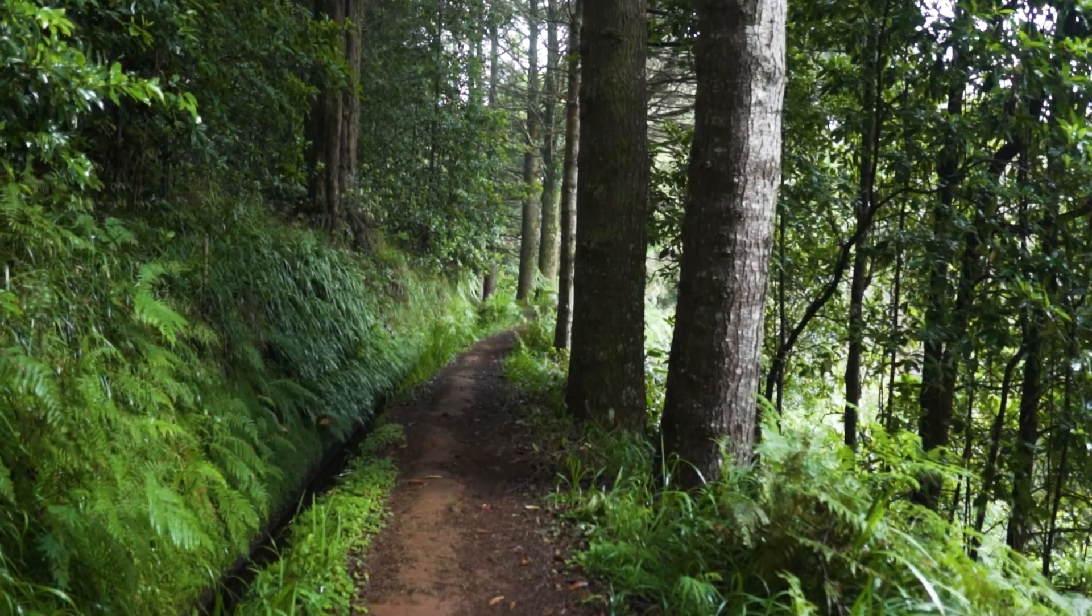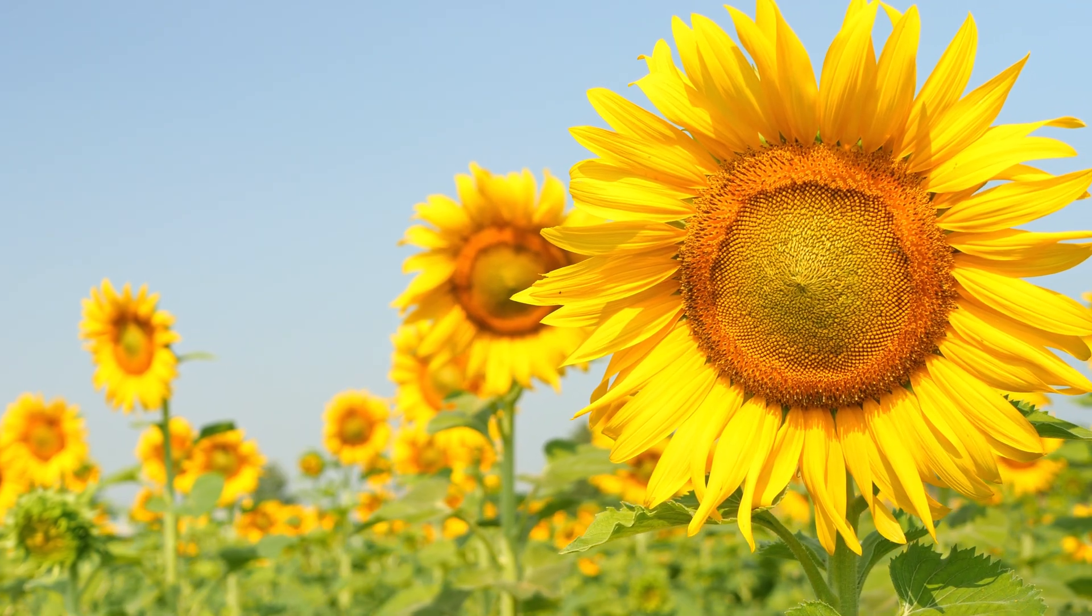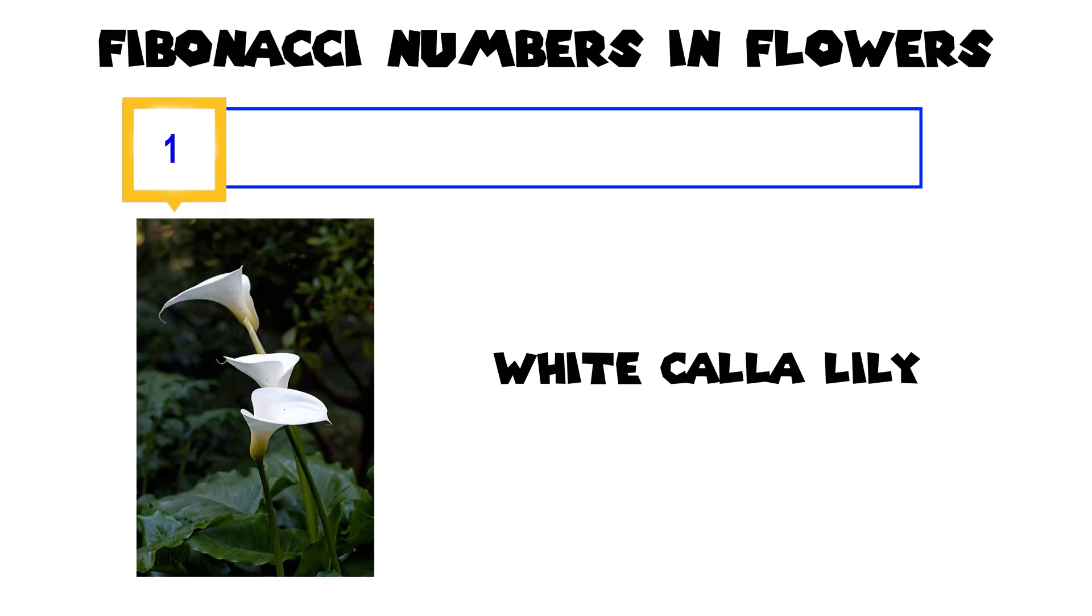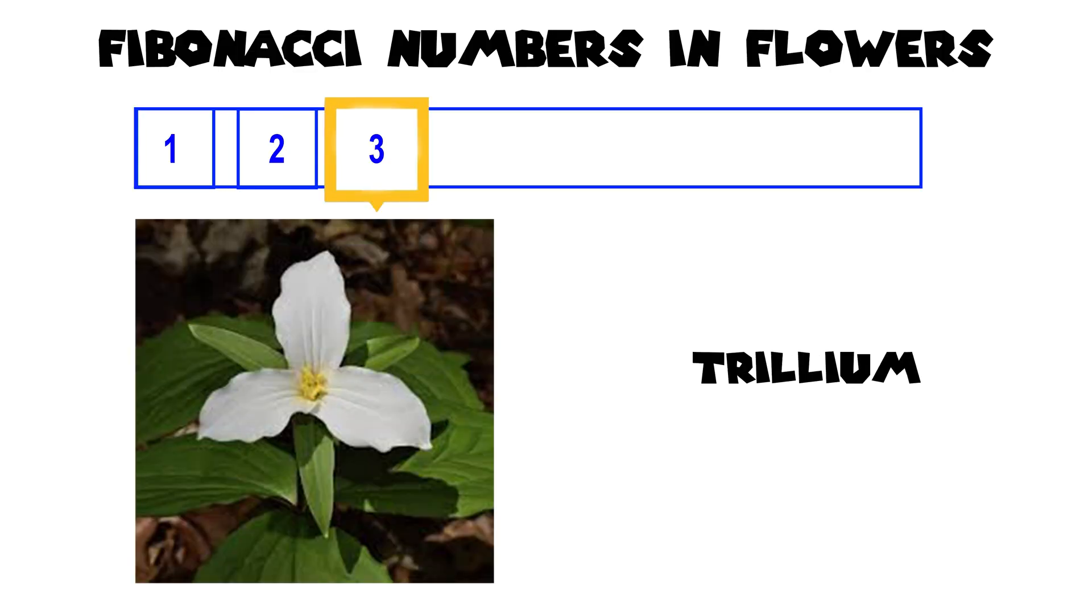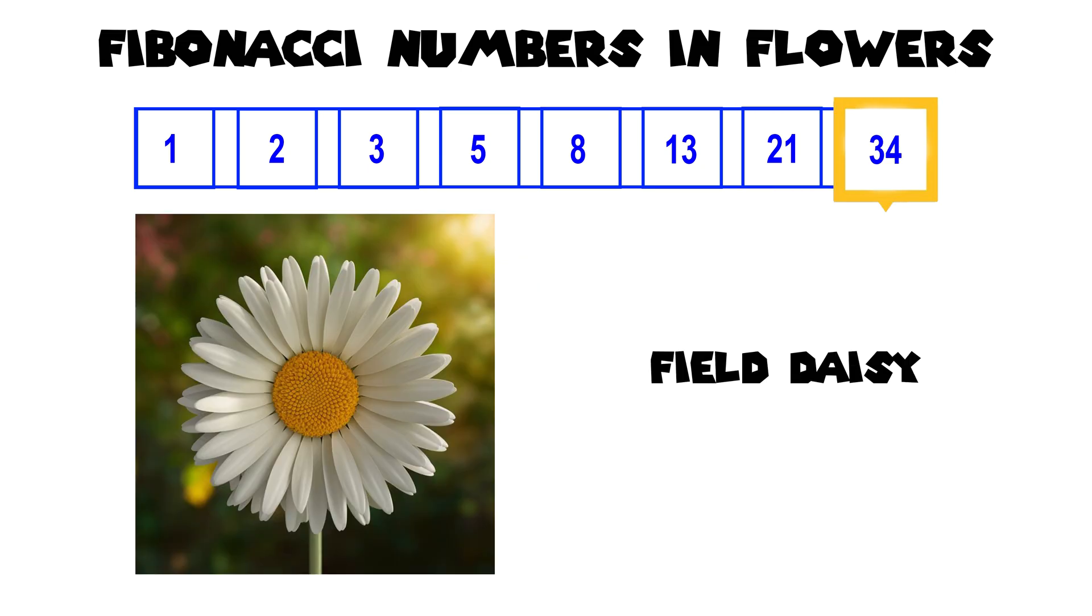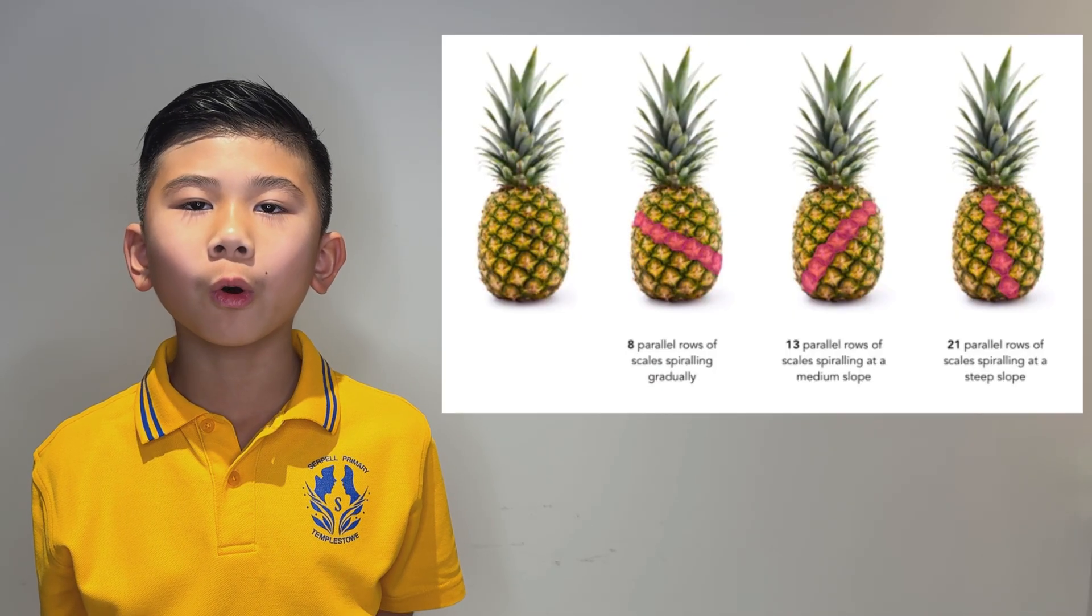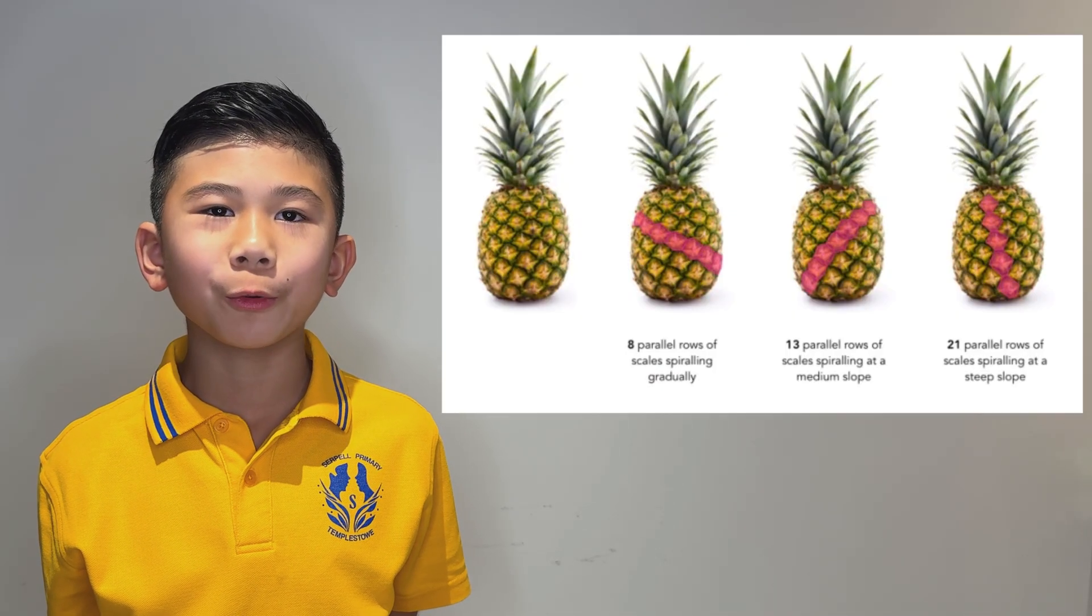These numbers pop up everywhere in nature. If you look at roses, tulips, sunflowers, they all have petals that add up to 1, 2, 3, 5, 8, 13, 21 or 34 petals. While rows of seeds in sunflowers, pine cones and pineapples will always add up to Fibonacci numbers.